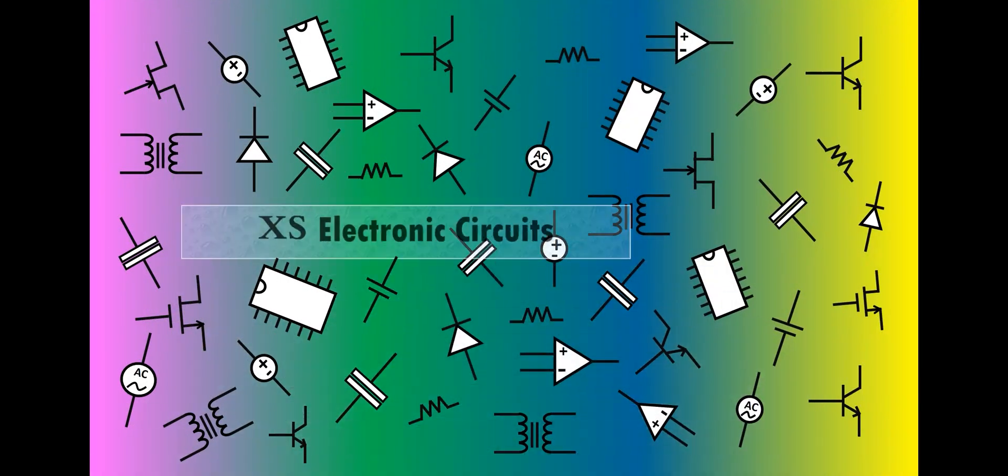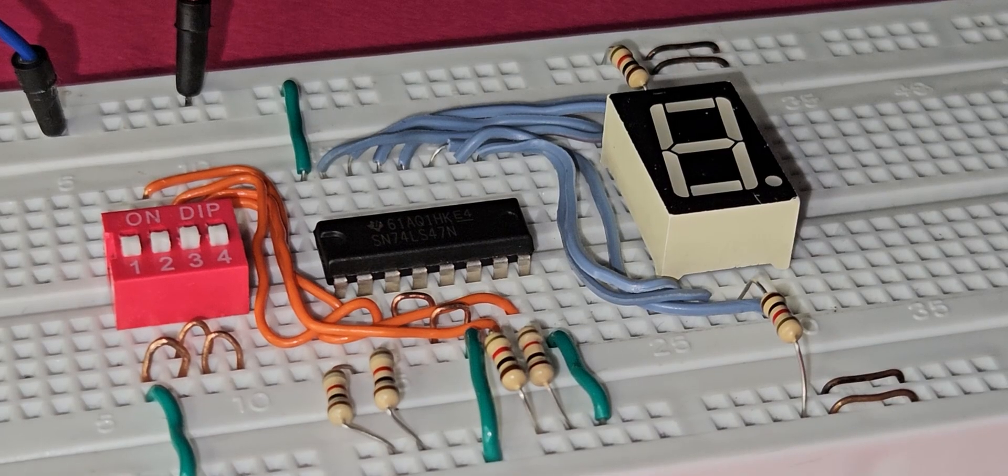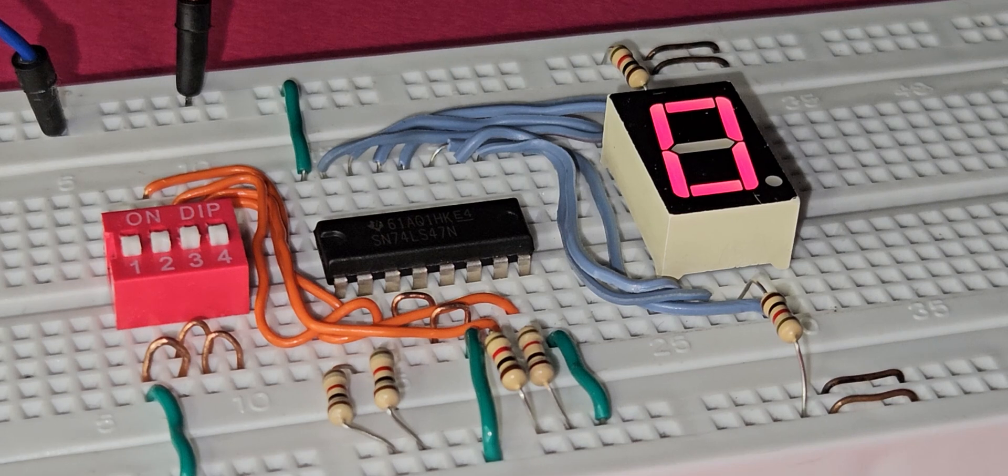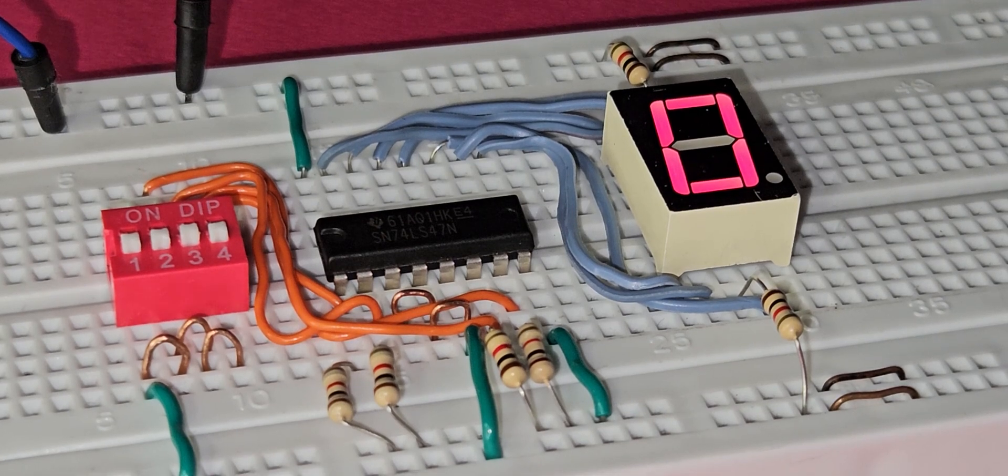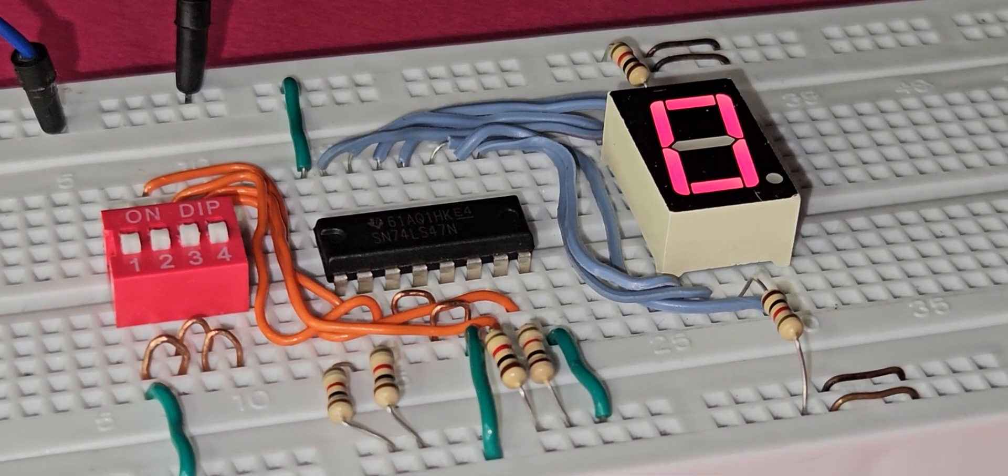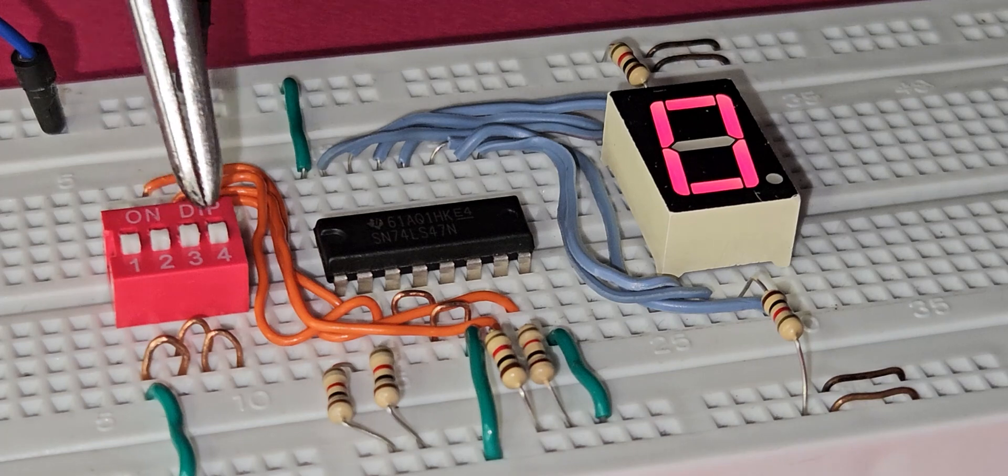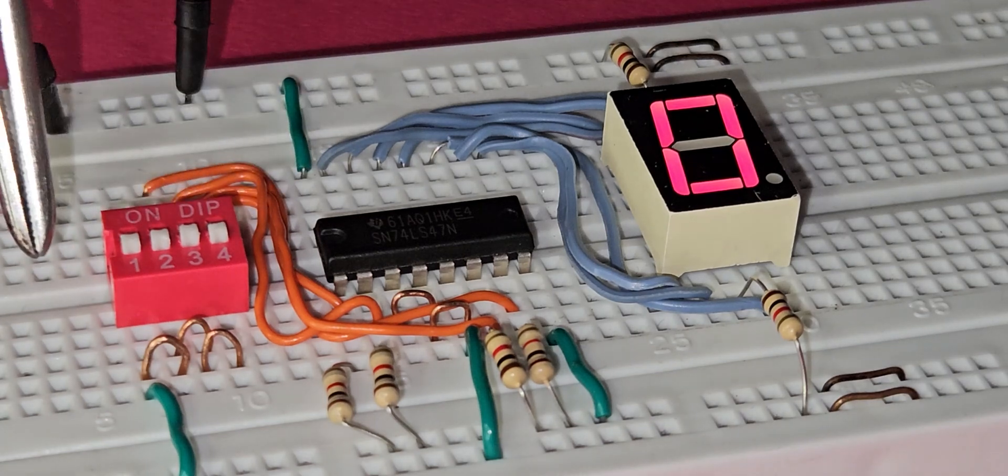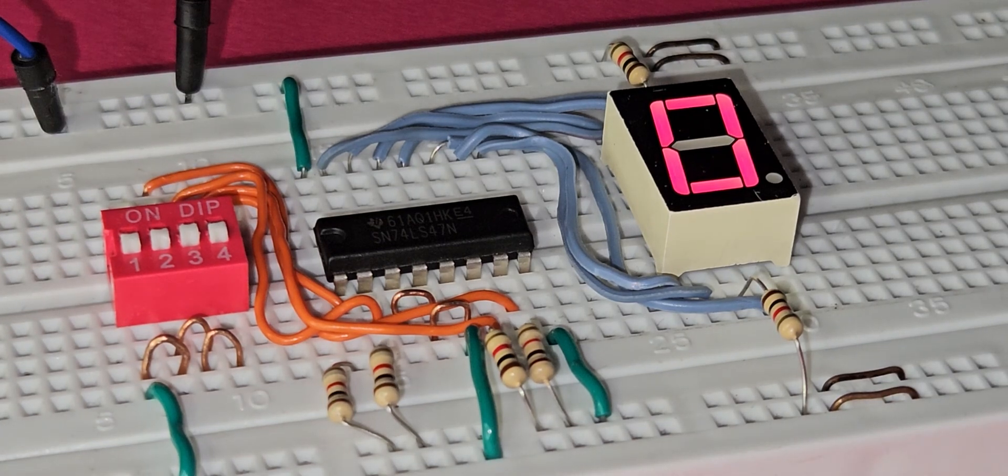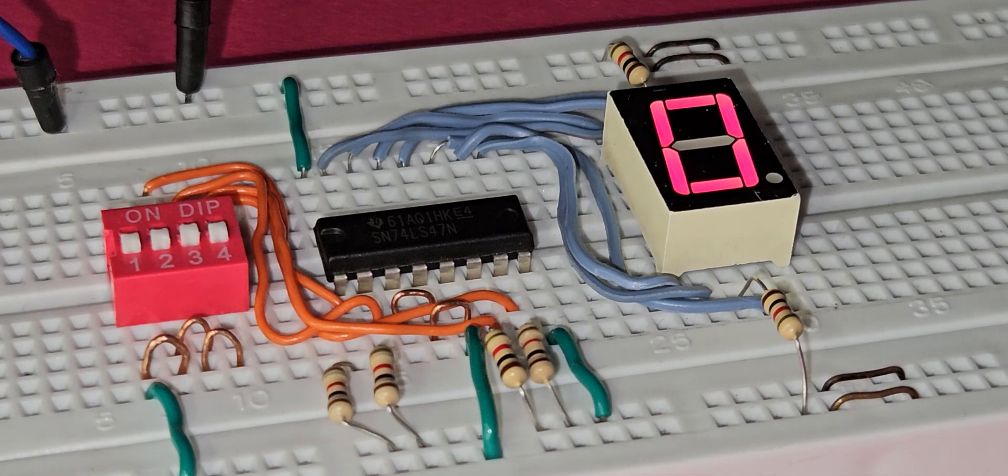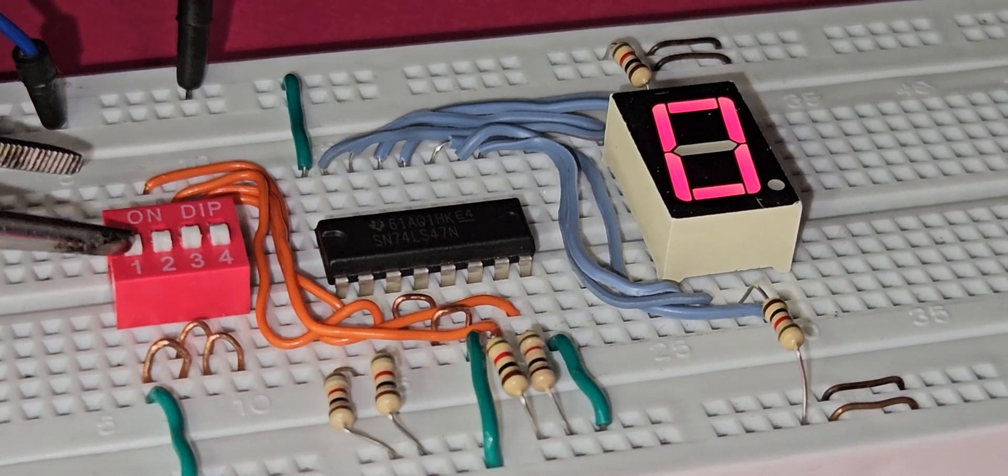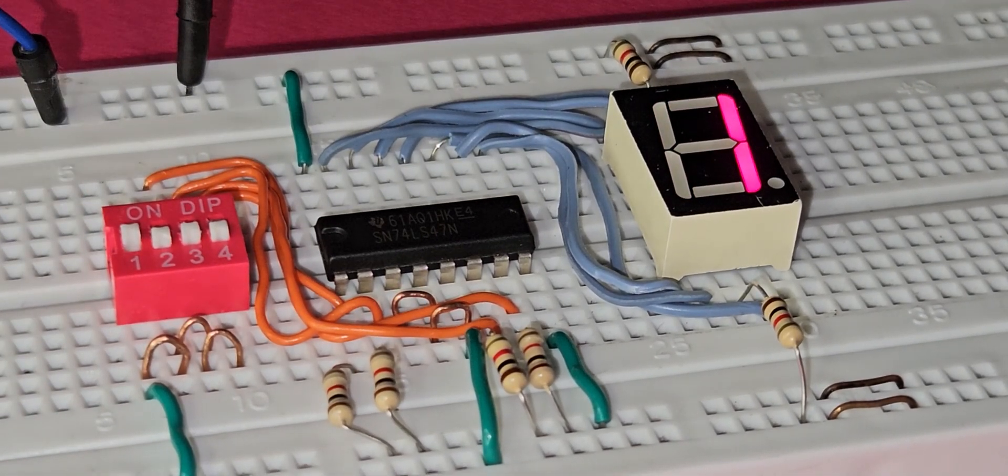Welcome to Excess Electronic Circuits channel. This circuit explains the operation of IC 7447. IC 7447 is a BCD to seven segment converter. By applying binary values to the input of the IC, the seven segment LEDs light up and display the decimal number corresponding to the binary number.